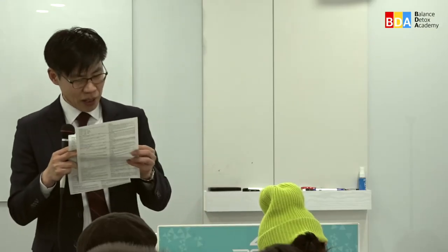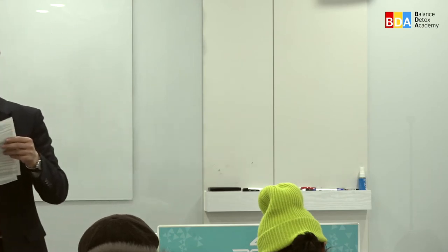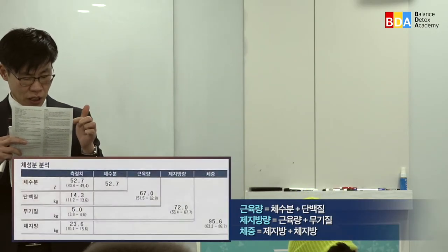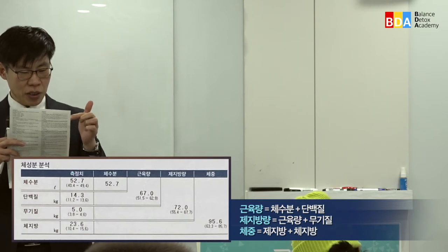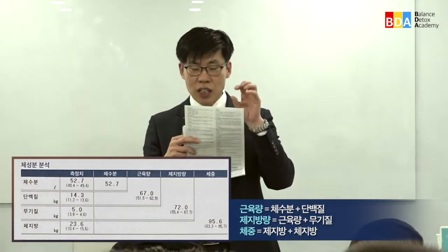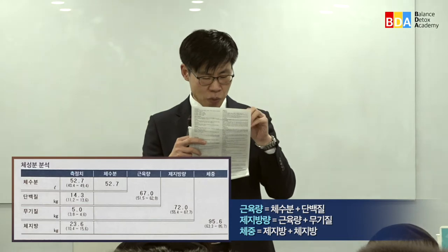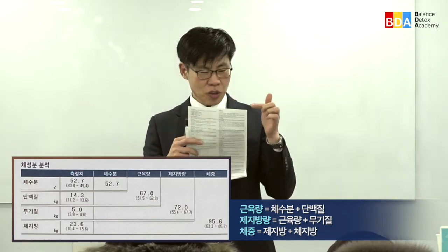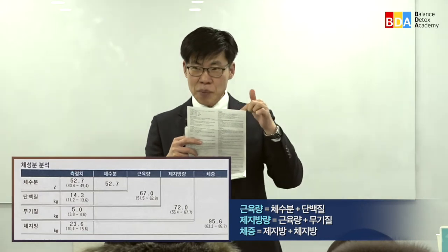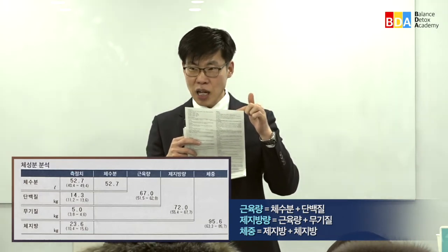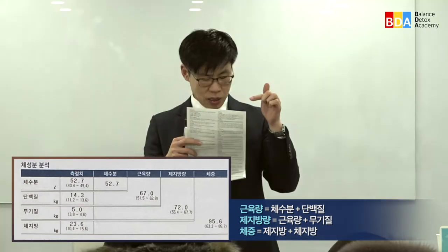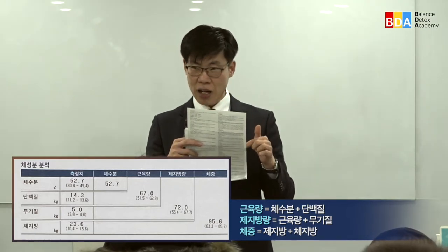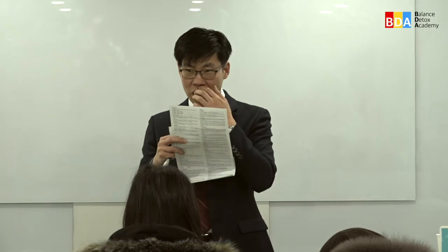체수분과 단백질을 합치면 근육량이 나오고, 그 밑에 무기질이 있습니다. 근육량에 무기질을 합치면 체지방량이 됩니다. 체수분, 단백질, 무기질 이 세 가지를 합치면 체지방량이 되고, 체지방량에 체지방 4가지를 합치면 체중이 나옵니다.